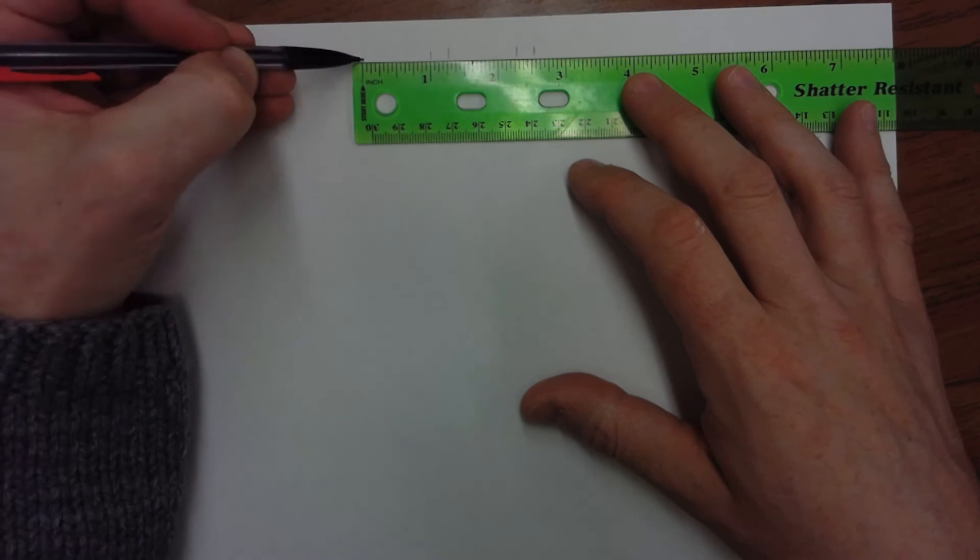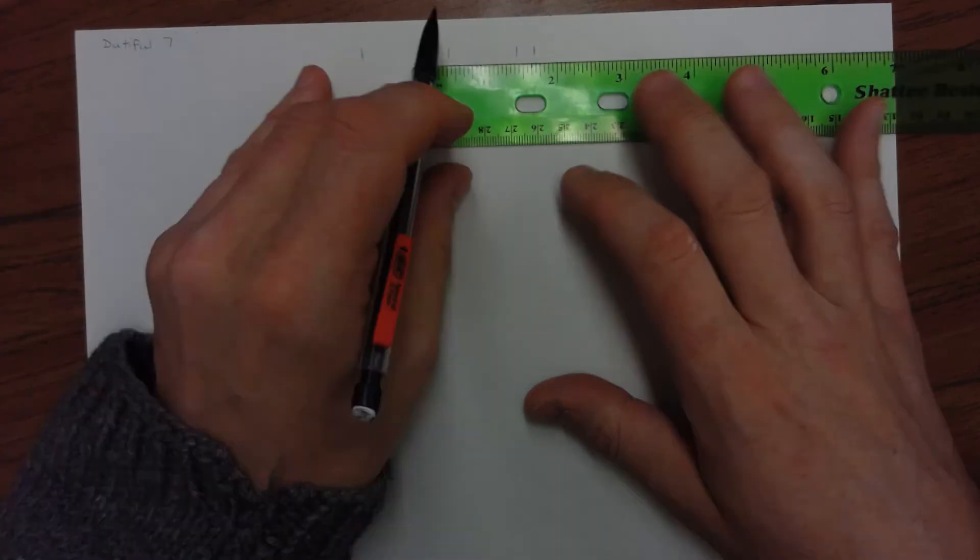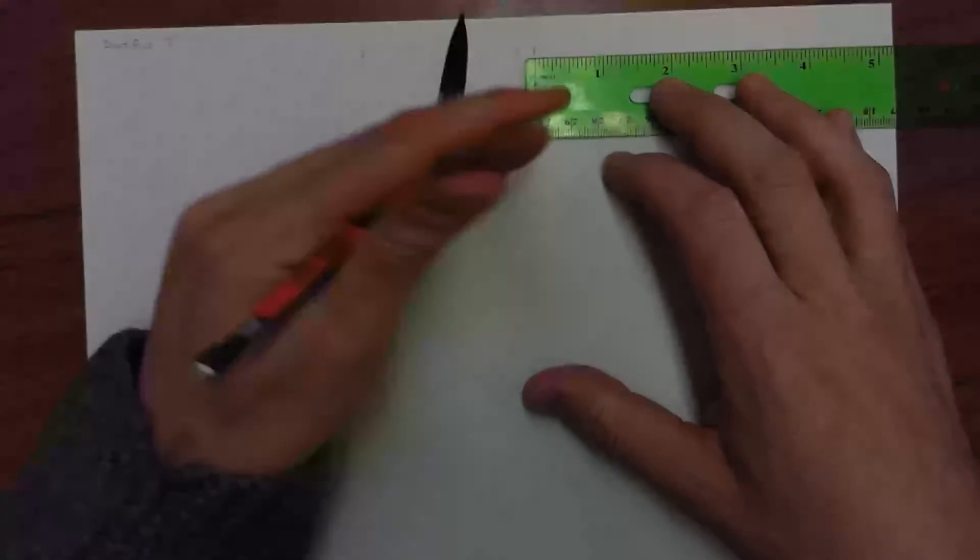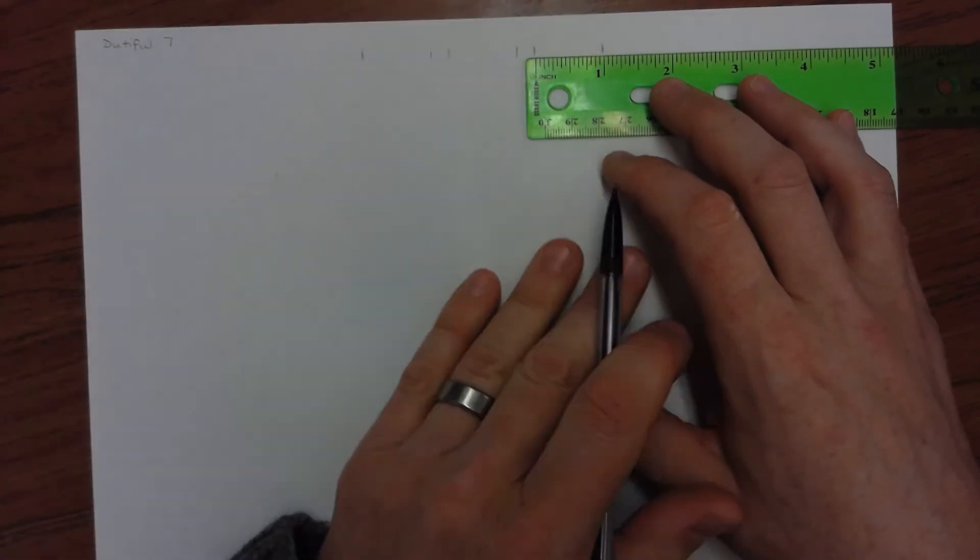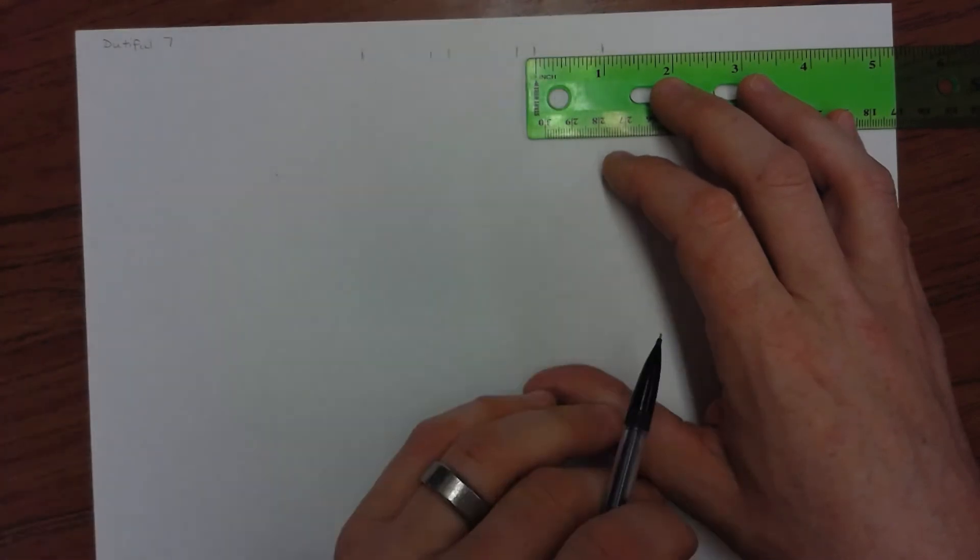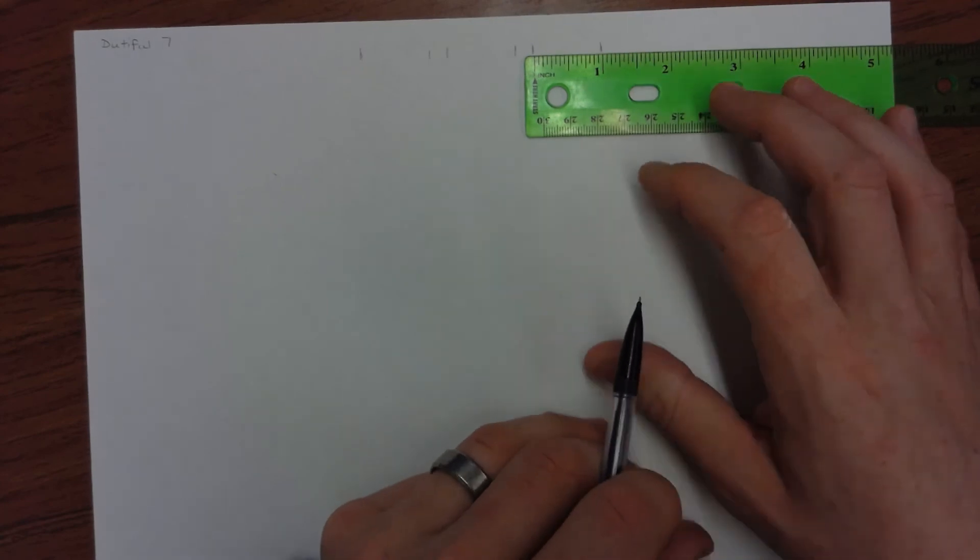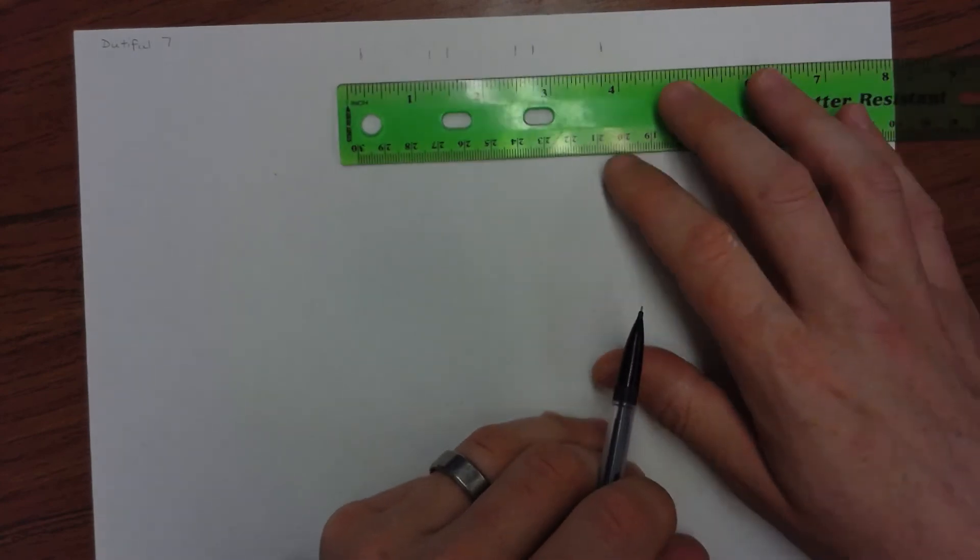I'm going to come over another inch on each side. Now, if I had a three letter word, this is what I'd have. But since I have a seven letter word, I'm going to keep going.